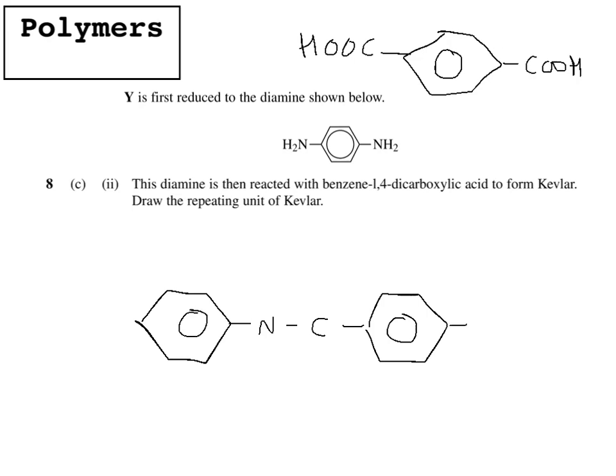Then on this side we have a C double bond O, and on this side we have an N with an H. And so if this joined onto this again, you would form this. So that's our repeating unit there. And you'll also form water, because one OH group has come off this C, and one H has come off this N.